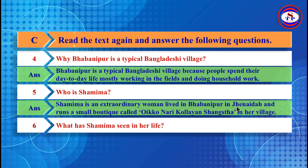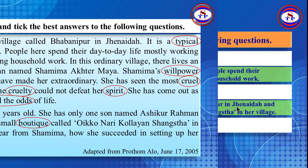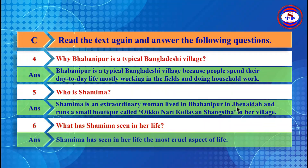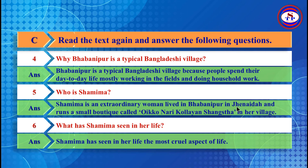Number 6: What has Shamima seen in her life? Look at the specific part of the passage to answer this question. Your answer is: Shamima has seen the most cruel aspect of life.